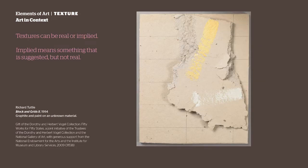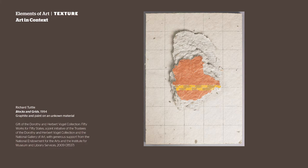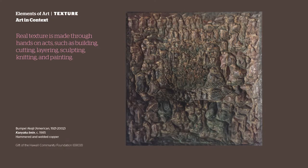Textures can be real or implied. Implied means something that is suggested but not real. When we felt the fabric of our shirts and the material of our chairs, we were feeling real texture. Real texture is made through hands-on acts such as building, cutting, layering, sculpting, knitting, and painting. There are lots of different ways to make real textures.